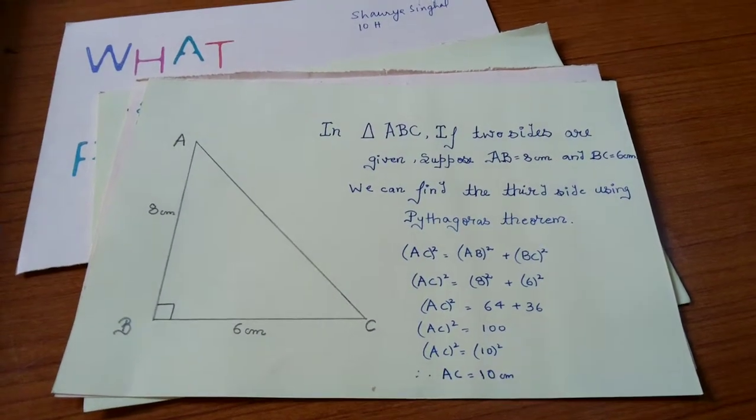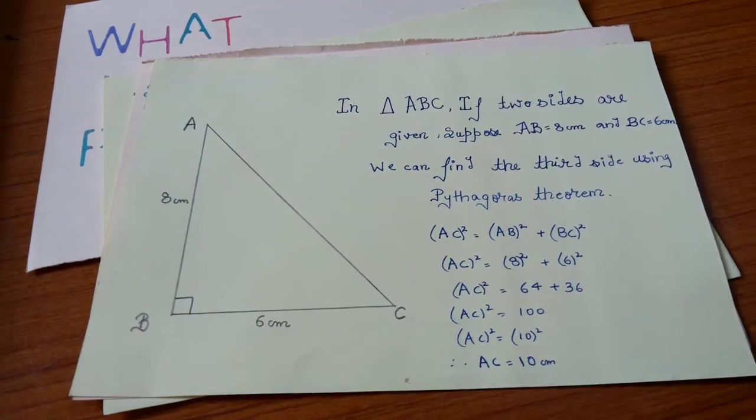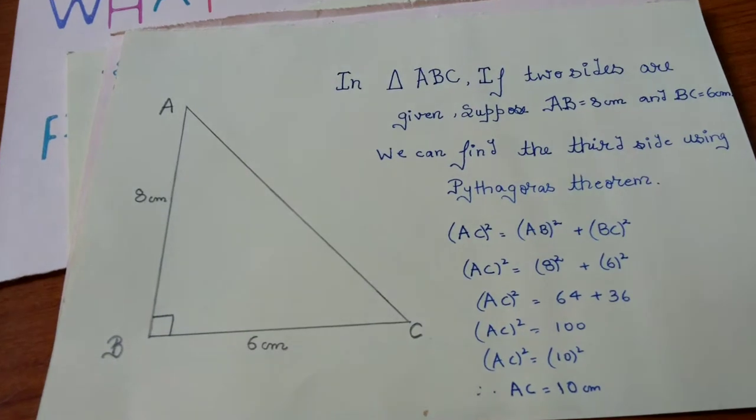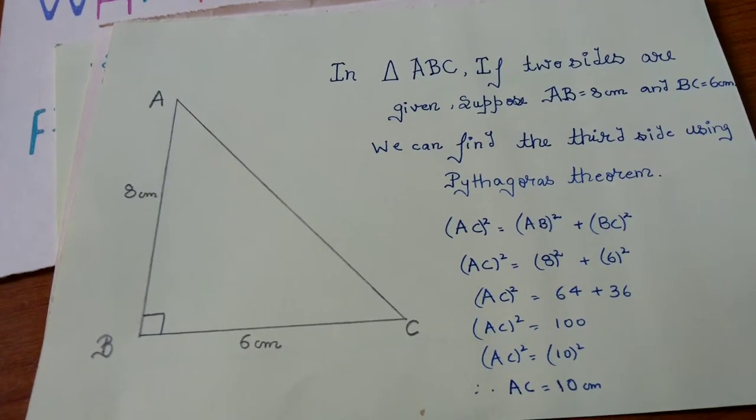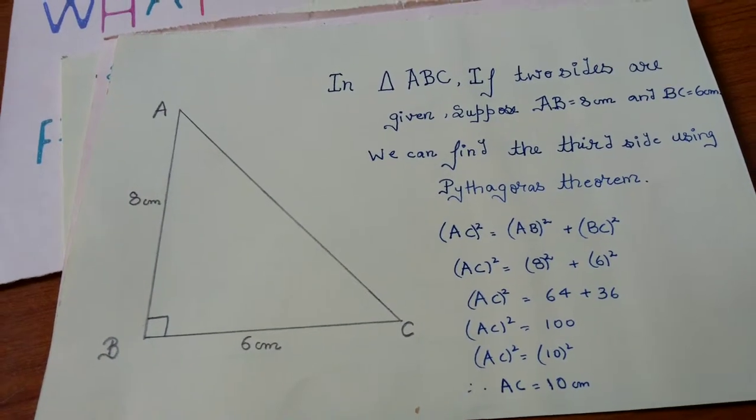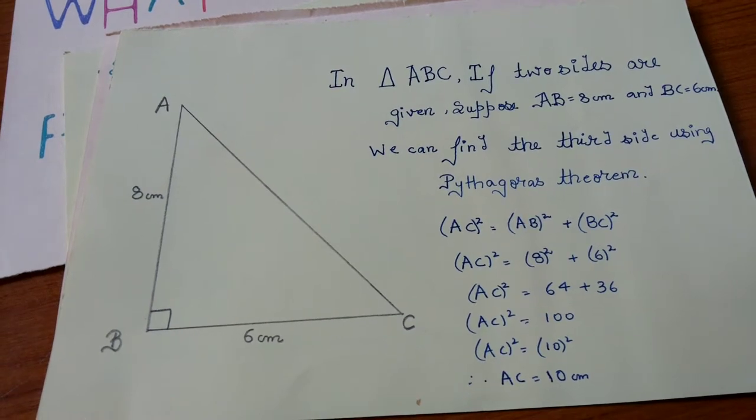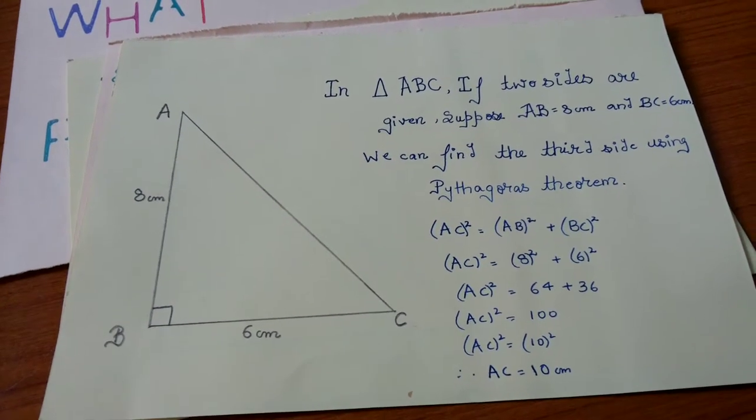If we consider an example right triangle ABC right angled at B and if we are given two sides AB is equal to 8 cm and BC is equal to 6 cm, we can find AC using Pythagoras theorem.